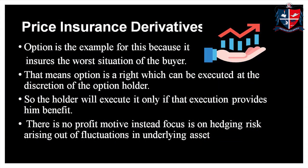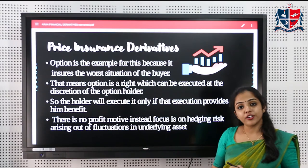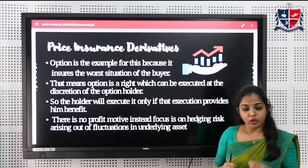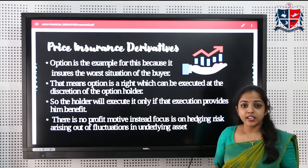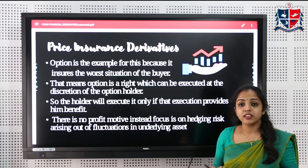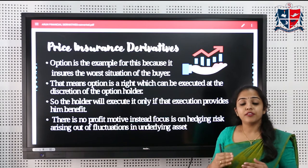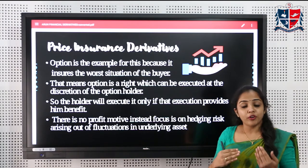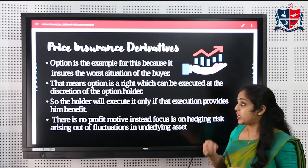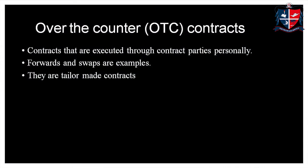The second classification is price insurance derivatives, the best example being options. With options, the option holder or buyer has the right to exercise the contract on the maturity date. If the contract is not favorable at maturity, the holder is not required to exercise it — thus insuring the price.